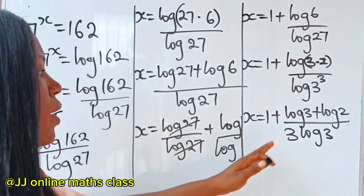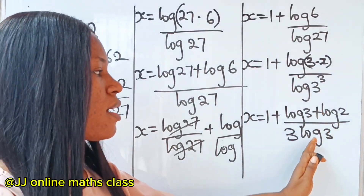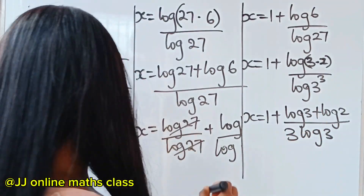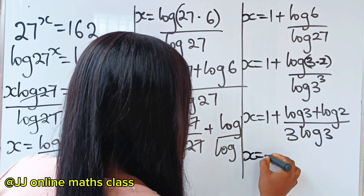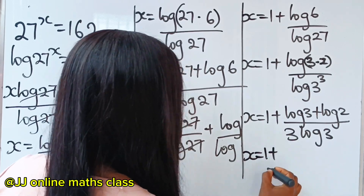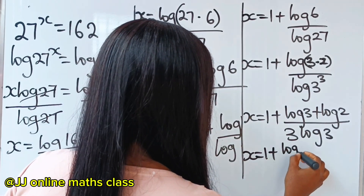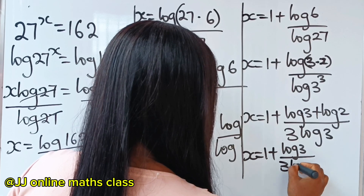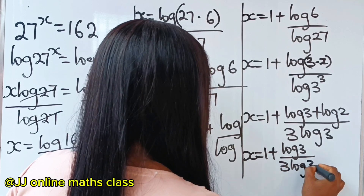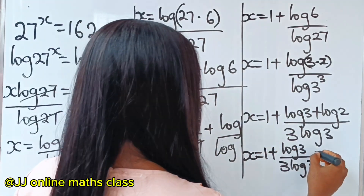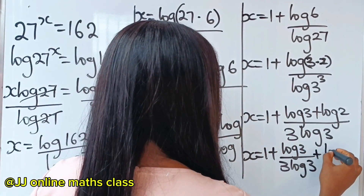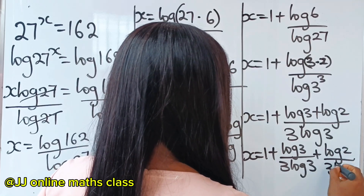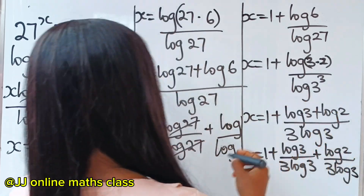We can see we now have two separate parts. So x is equal to 1 plus log 3 divided by 3 log 3, plus log 2 divided by 3 log 3.